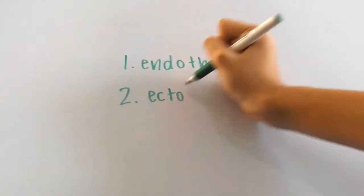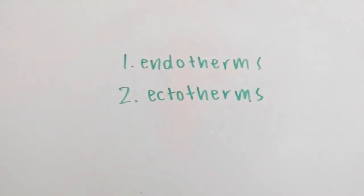But anyways, we've got two types of organisms on the stage today, and these are endotherms and ectotherms.